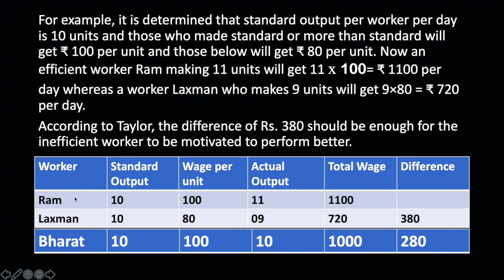Take the example of RAM. The standard output is 10 units. If RAM has produced 11 units — more than the standard — then he will get wages at the rate of ₹100 per unit. So his total wages will be ₹1,100. But if a worker produces less than the standard, say only 9 units, then he will get at the rate of ₹80 per unit.